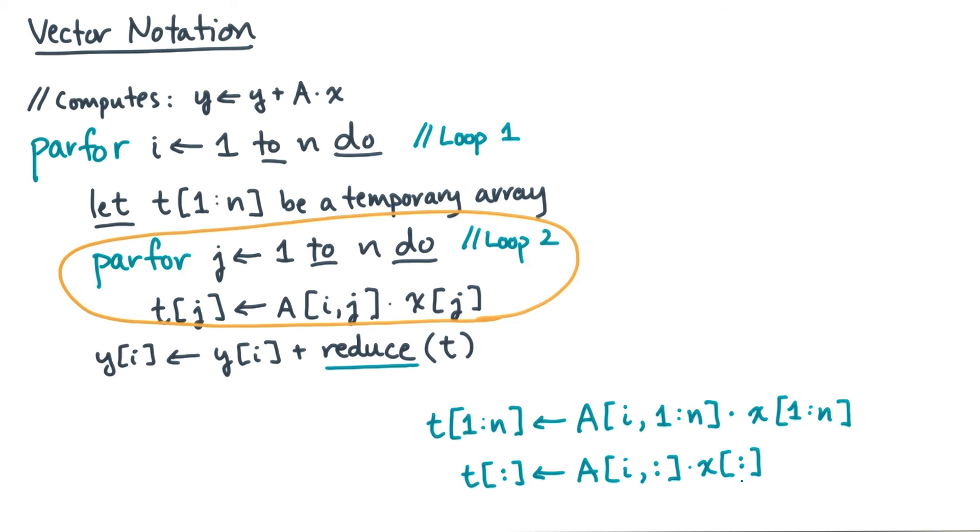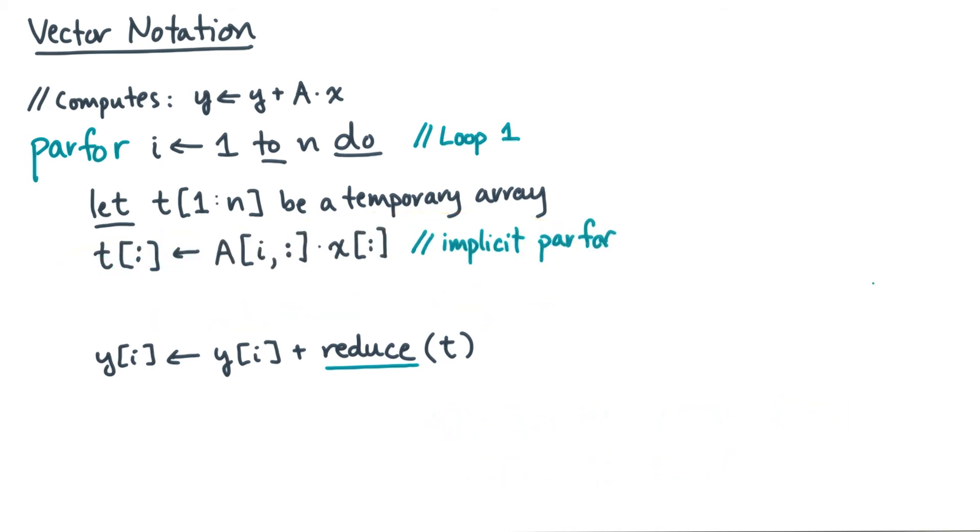Let's go ahead and plug that in. And of course, we're all mature enough to see that this vector operation can be easily converted into a parallel for loop. So when you're analyzing pseudocode that includes these kinds of vector operations, just go ahead and use the right work and span. In particular, these element-wise operations will have linear work and logarithmic span.